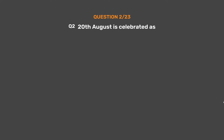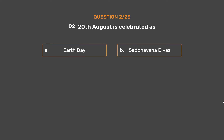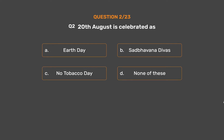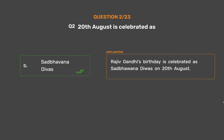Question No. 2. 20th August is celebrated as: Option A, Earth Day; Option B, Sadbhavana Divas; Option C, No Tobacco Day; Option D, None of these. The correct answer is Option B, Sadbhavana Divas. Rajiv Gandhi's birthday is celebrated as Sadbhavana Divas on 20th August.